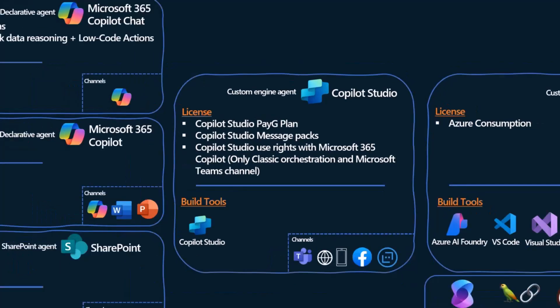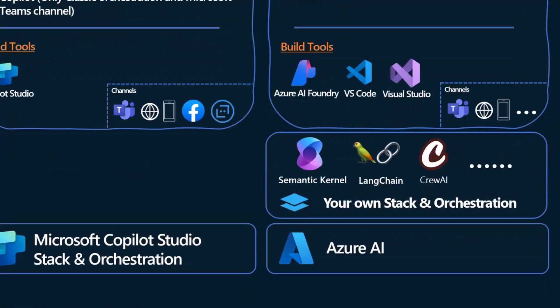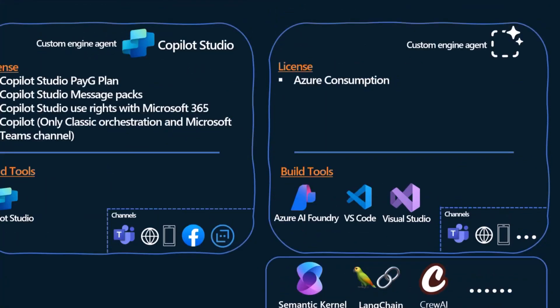Sometimes you need to go even deeper — you need full control over your entire stack from the infrastructure level. You want to build on Azure, thinking about every millisecond, with your own orchestration using Semantic Kernel, LangChain, or whatever you prefer. This is where you go with custom engine agents over Azure, possibly building with LLMs from Azure AI Foundry. Build tools include VS Code and Visual Studio. From a channel perspective, it is completely open — you can publish to any channel and even build unconventional AI agents that power what I call an 'agentic experience,' where an agent works in the background and you don't need to build an explicit agentic or chat workflow.